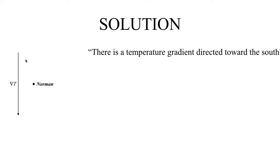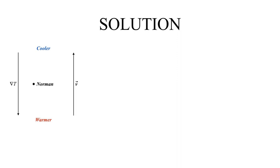You may recall from the definition of the gradient itself, the gradient points from lower values of your scalar to higher values. So if the temperature gradient points toward the south, that means lower values of temperature to the north and higher values to the south — the air to the north is cooler and the air to the south is warmer. The other piece of information is the southerly wind. Remember, southerly means blowing from south to north, so the wind looks something like this, blowing from south to north.